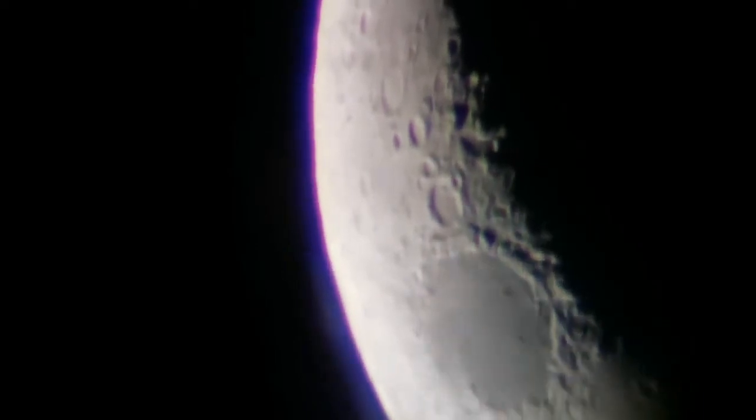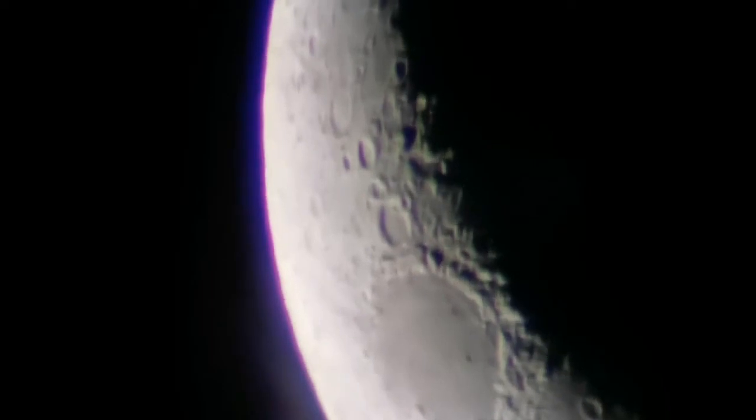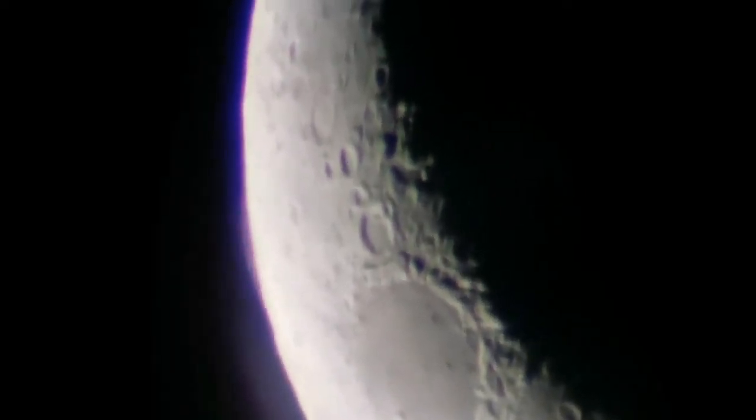This is at very high magnification, TMB 3.2 millimeter. You can see Oceanus Procellarum and the Mare Crisium in the lower part of the center.